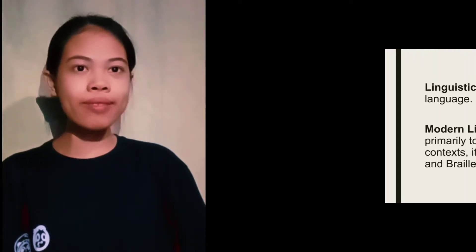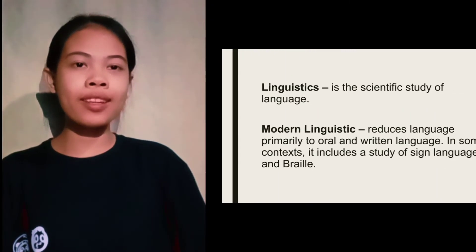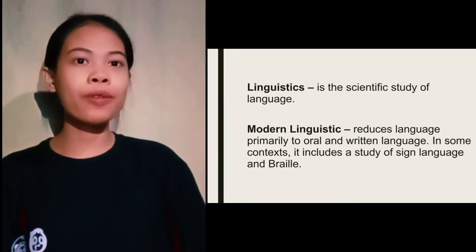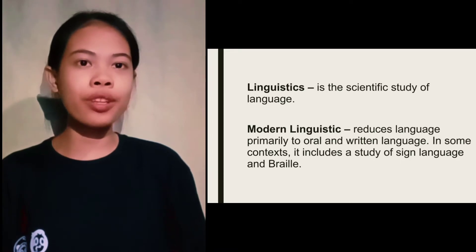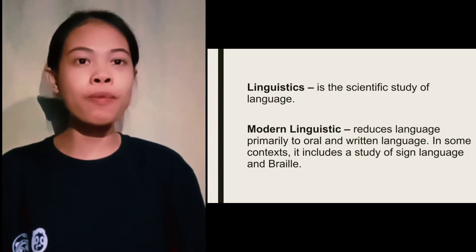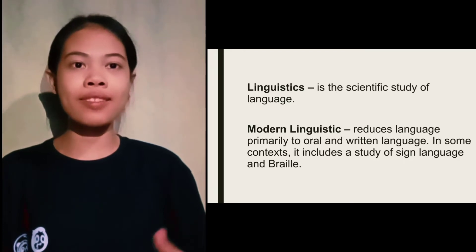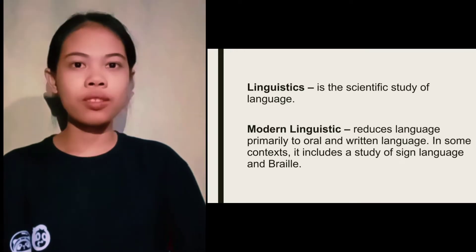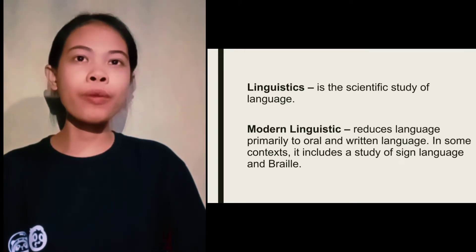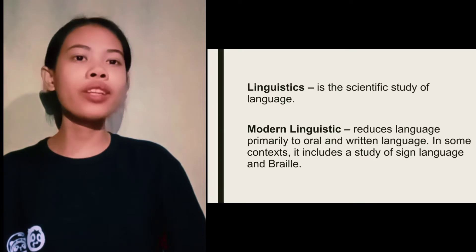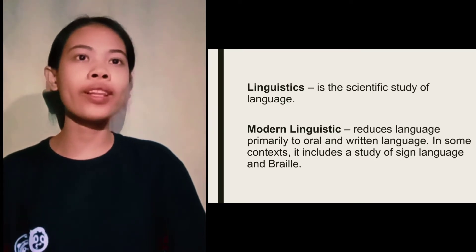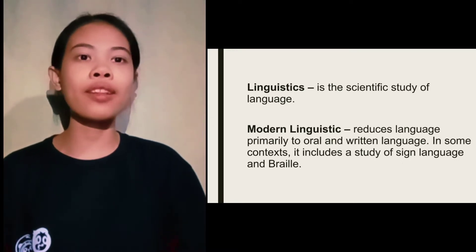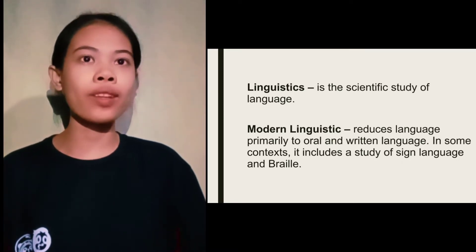When we say linguistics, it is the scientific study of language. Human language is understood as a systematic use of speech, sounds, signs, and symbols that are used to communicate among people. When we say modern linguistics, it reduces language primarily to oral and written languages, and in some contexts, it includes the study of sign language and braille.